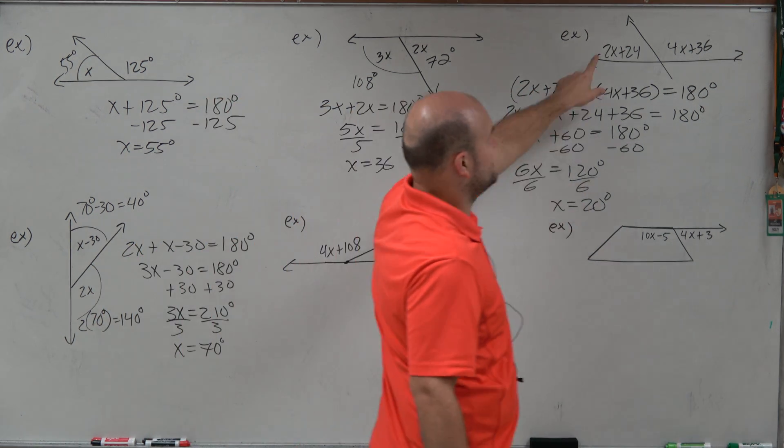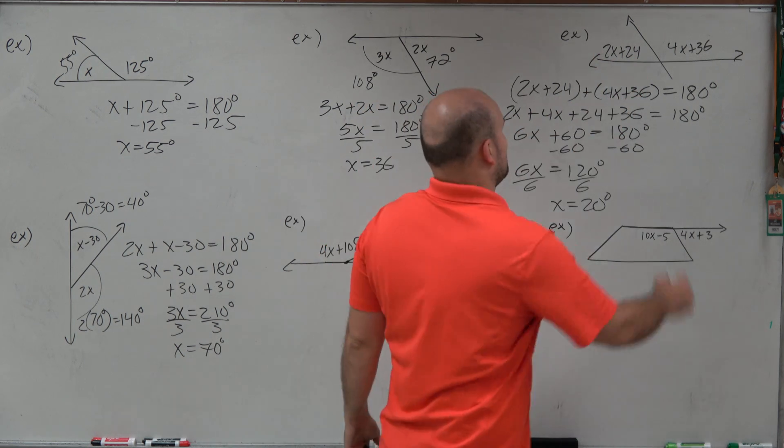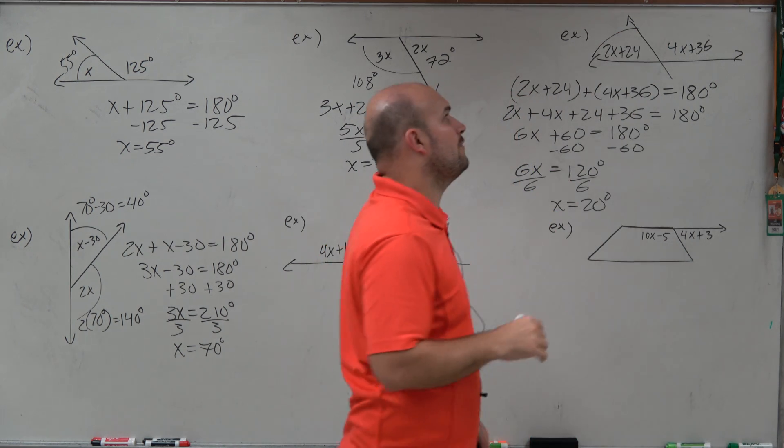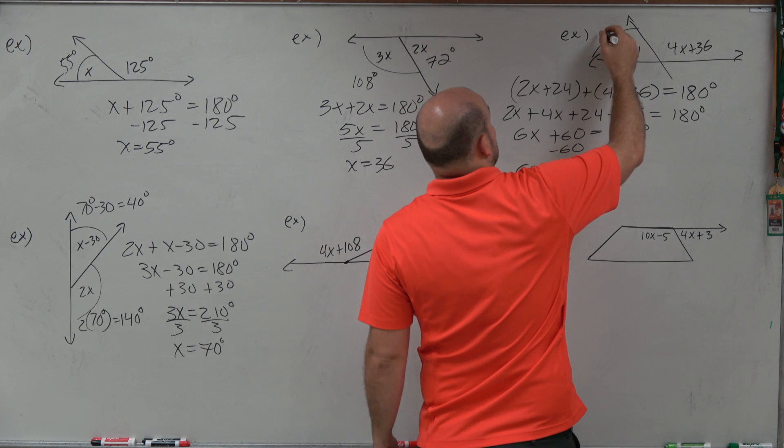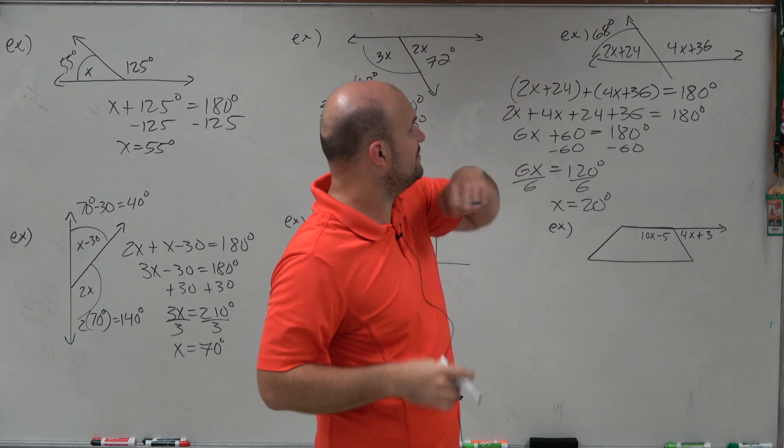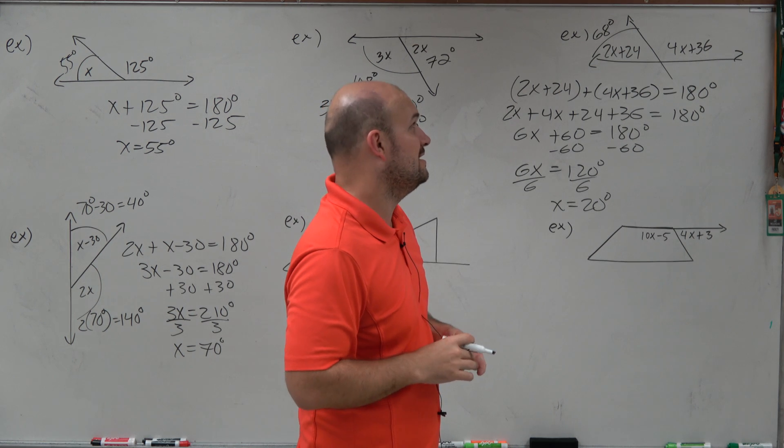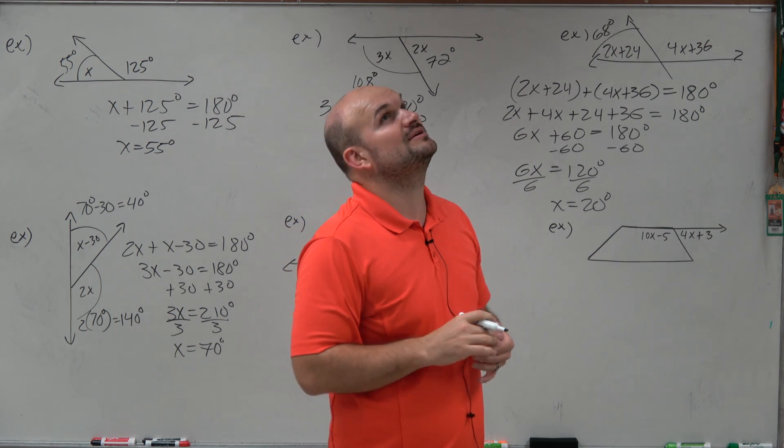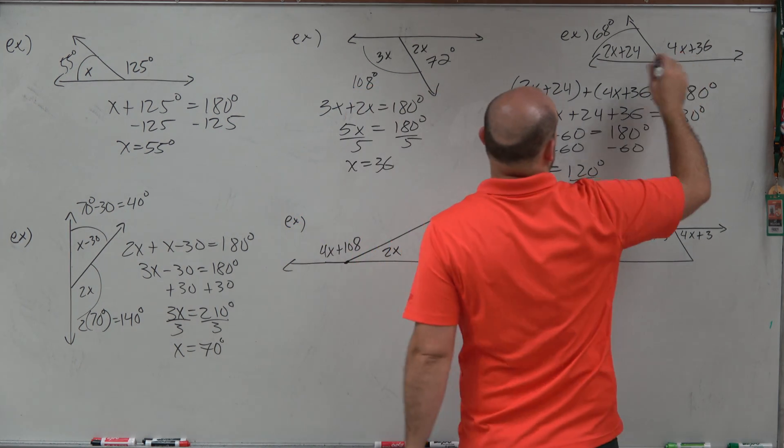Now I can just plug 20 degrees back in here. And again, I'm going to kind of do a little mental math. 2 times 20 is 40, plus 24 is going to be 64 degrees. And then over here, 4 times 20 is going to be 80, plus 36 is going to be 116.